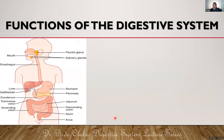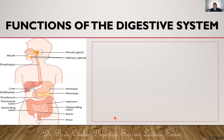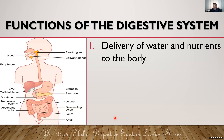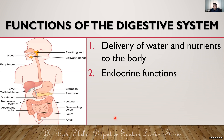In terms of functions, we can state that the GIT is responsible for delivering water and nutrients to the rest of the body. It also has some endocrine functions — it produces hormones. When we talk of endocrine functions of the digestive system, we can cite examples like the pancreas producing hormones.